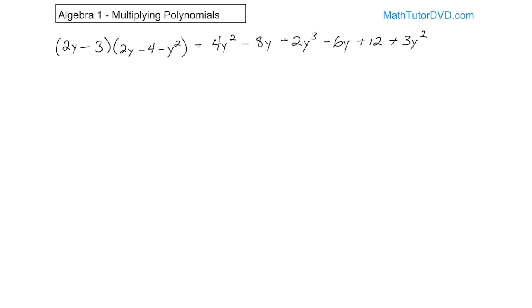Then negative 3 times negative y squared is positive 3y squared. Now we collect like terms, writing highest powers first. We have negative 2y cubed — no others — so write that first. Then 4y squared and 3y squared add to 7y squared. Then negative 8y and negative 6y add to negative 14y. And the 12 has nothing to add to. So the final answer is negative 2y cubed plus 7y squared minus 14y plus 12.